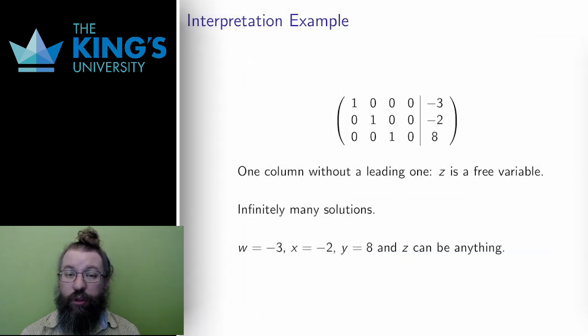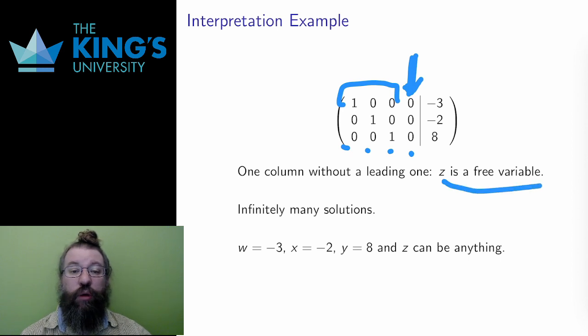This is a very similar matrix, but now there are four columns before the division. That means there are four variables, w, x, y, and z. The first three, w, x, and y, are determined, but z is free, since the z column has no leading ones. If I interpret this matrix, I can see that the first row translates to w equals negative three, the second to x equals negative two, and the third to y equals eight. z is free and can be anything, so there are so many solutions, and the dimension of the solution space is one.